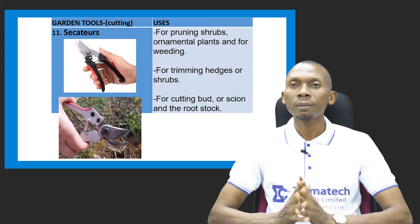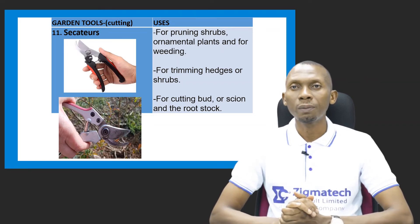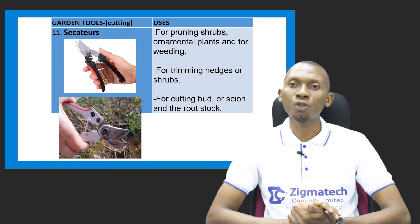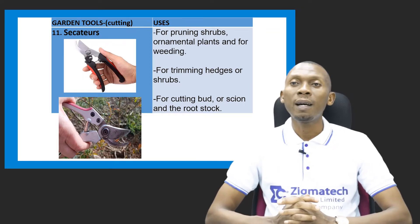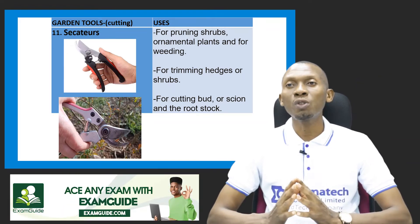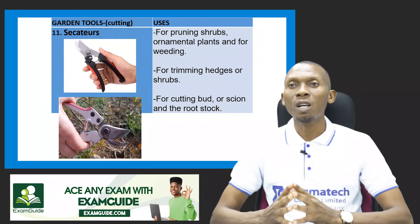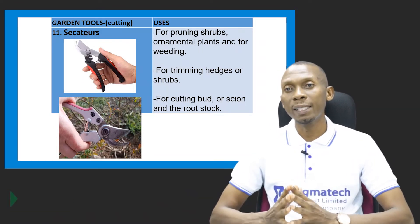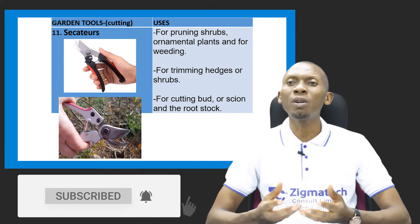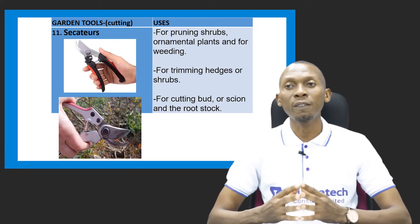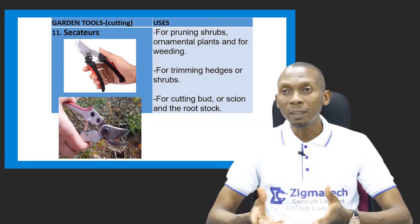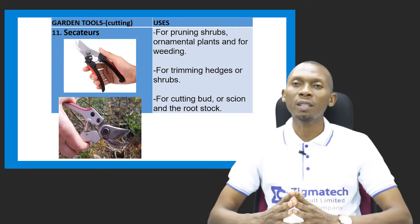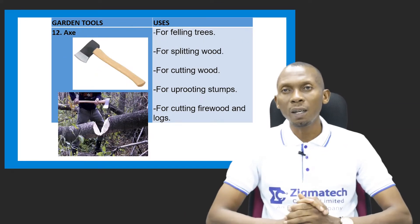The secateur is another garden tool — a cutting tool — used for pruning shrubs or ornamental plants, and also for some form of weeding. Pruning involves reducing the vegetation of our crops or plants. It can also be used for trimming hedges or shrubs, and for cutting scions or root stock in grafting or budding, which is a means of propagation using vegetative materials like the stem or bud.